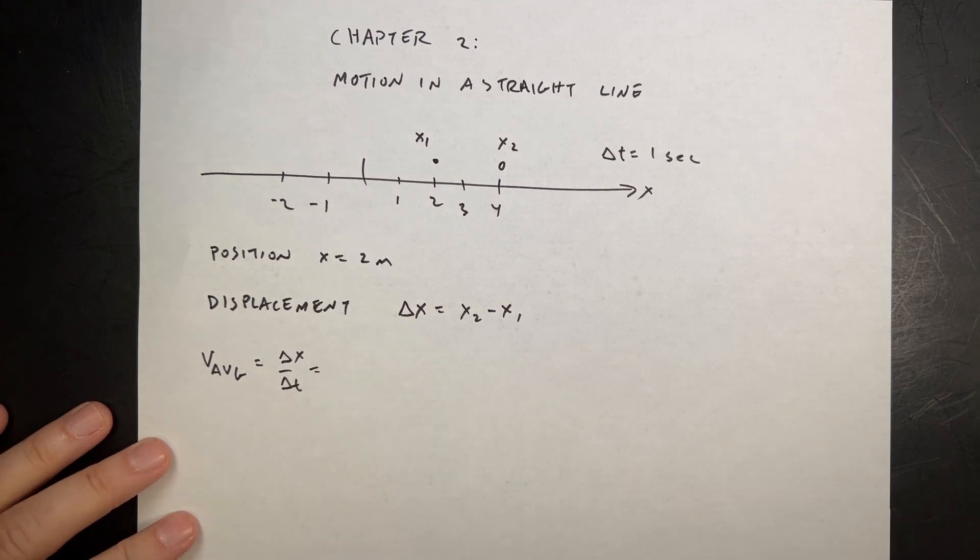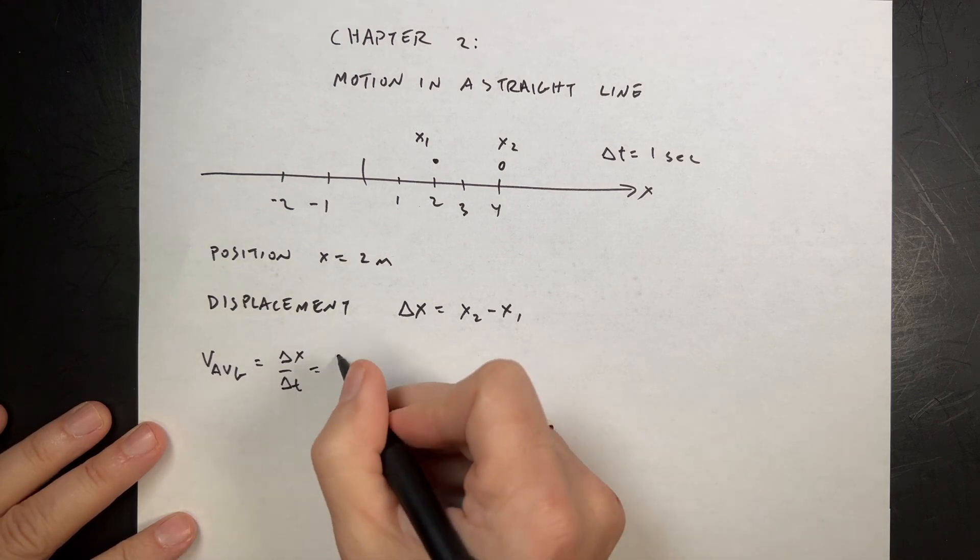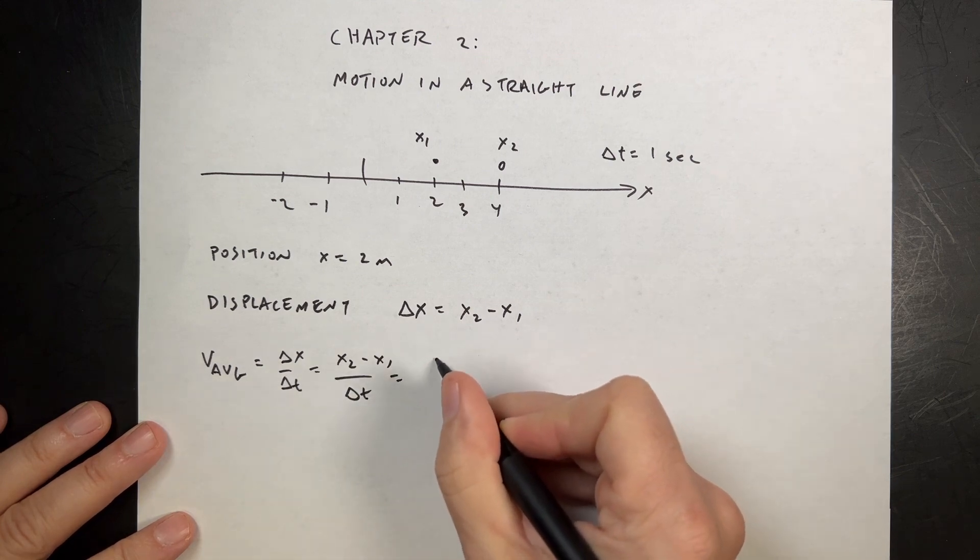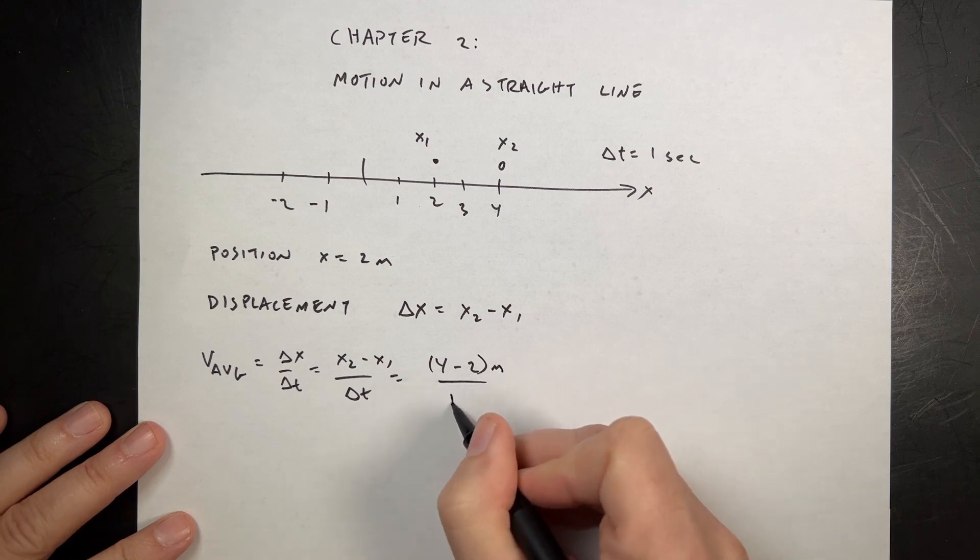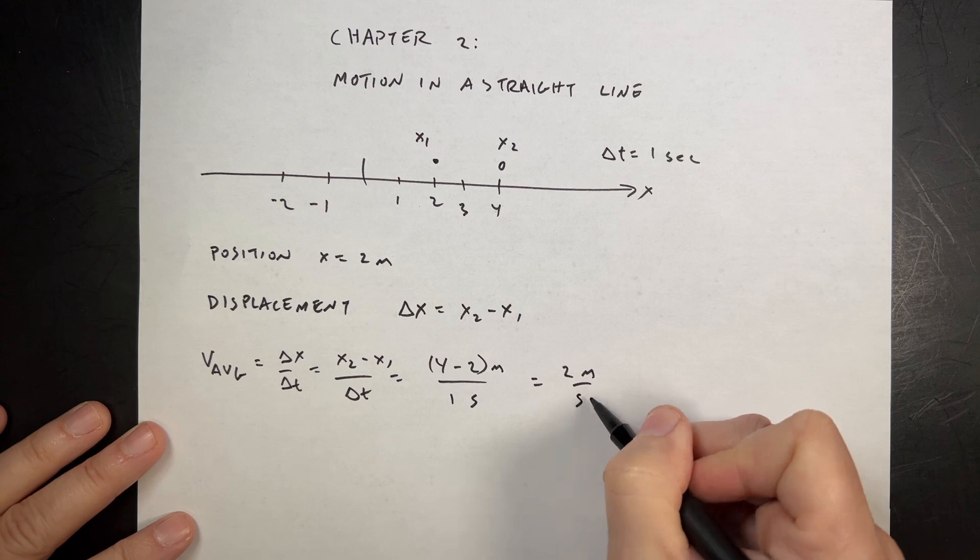I'm writing this as delta x over delta t. It's the rate of change of position. So that's going to be x2 minus x1 over delta t, which is 4 minus 2 meters over 1 second, which equals 2 meters per second.